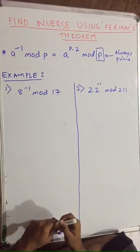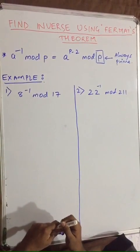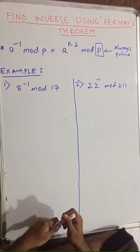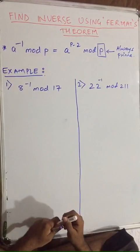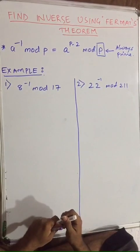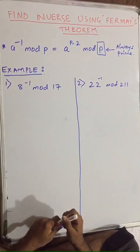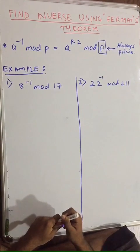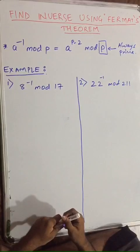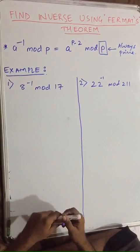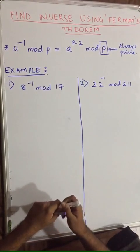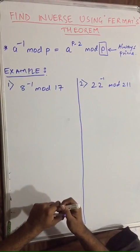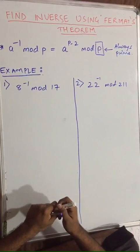Hello friends. Welcome to lecture 7. In this lecture, we are going to find out multiplicative inverse using Fermat's theorem. In the previous lecture, lecture number 6, we learned about what is Fermat's theorem. So in this lecture, we are going to find out multiplicative inverse using Fermat's little theorem.